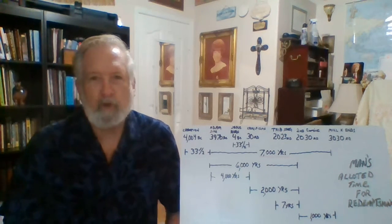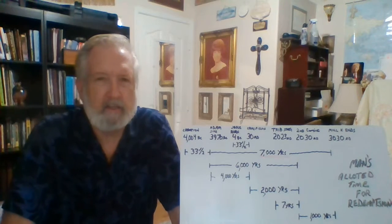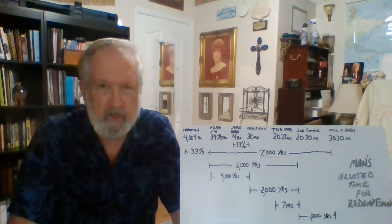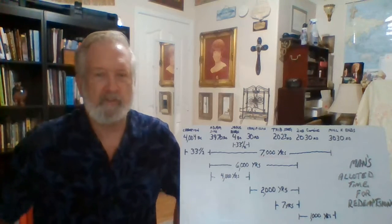It's July 15th, 2021, and I'd like to take a look at man's allotted time for redemption, being in a period of 7,000 years.